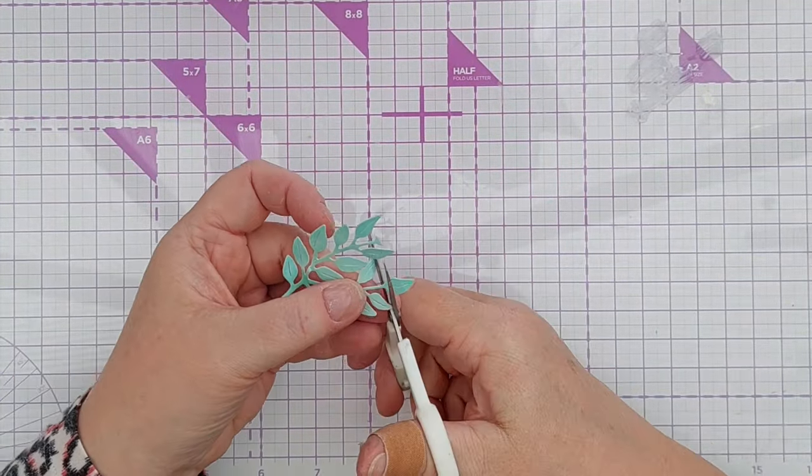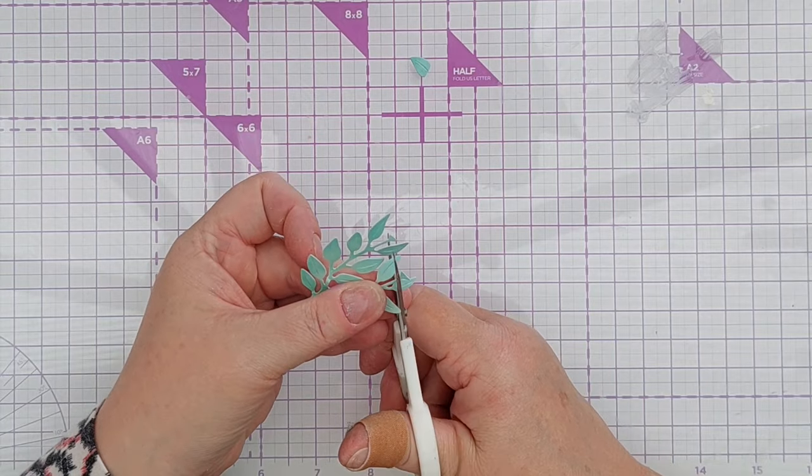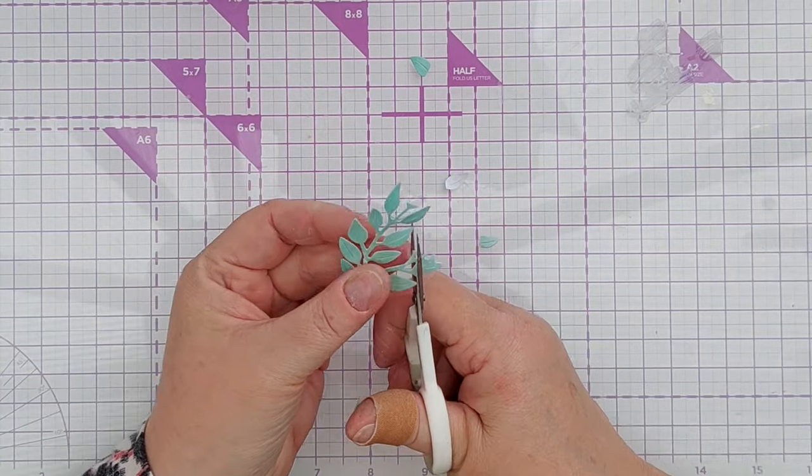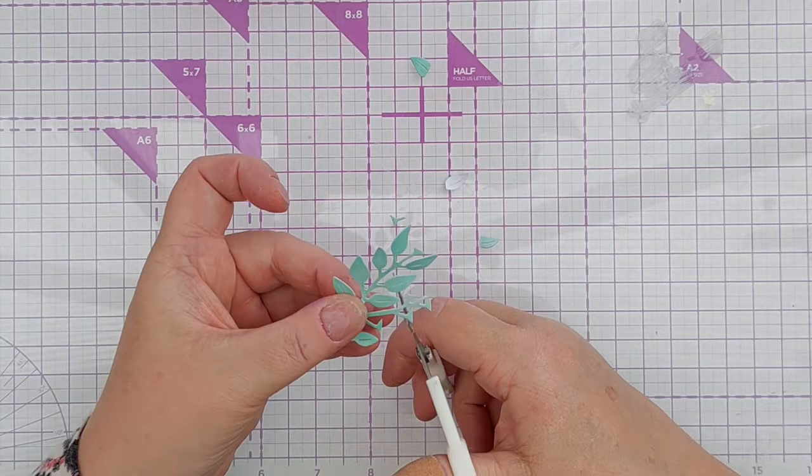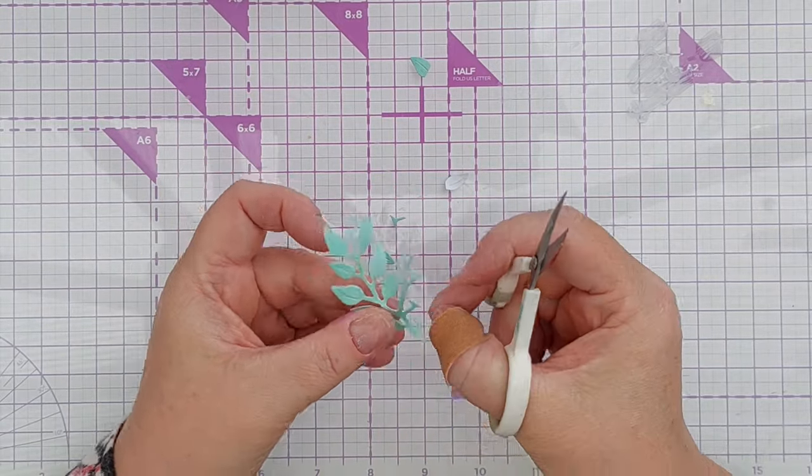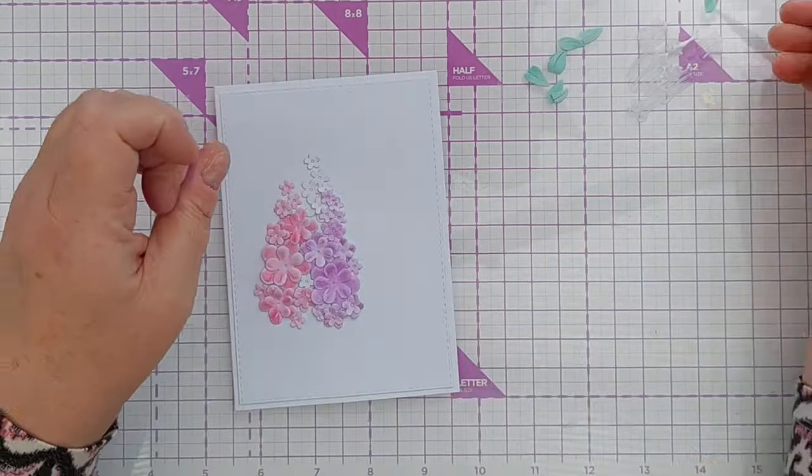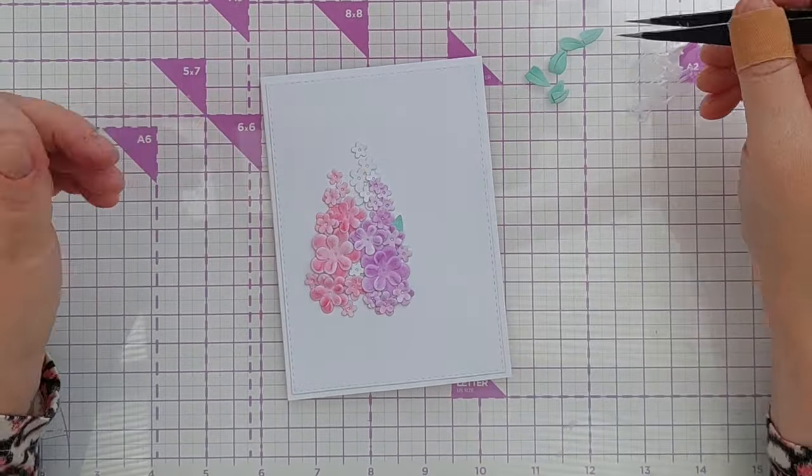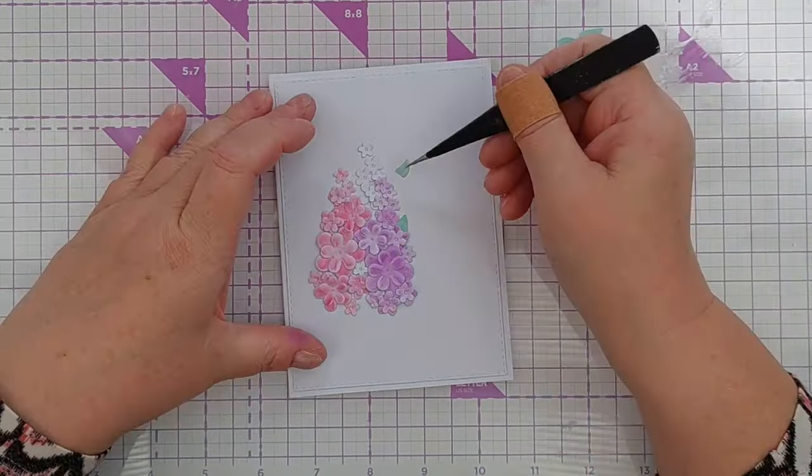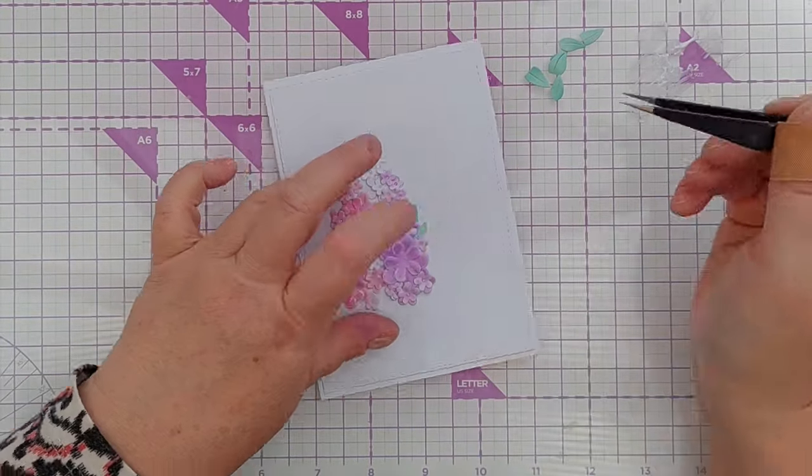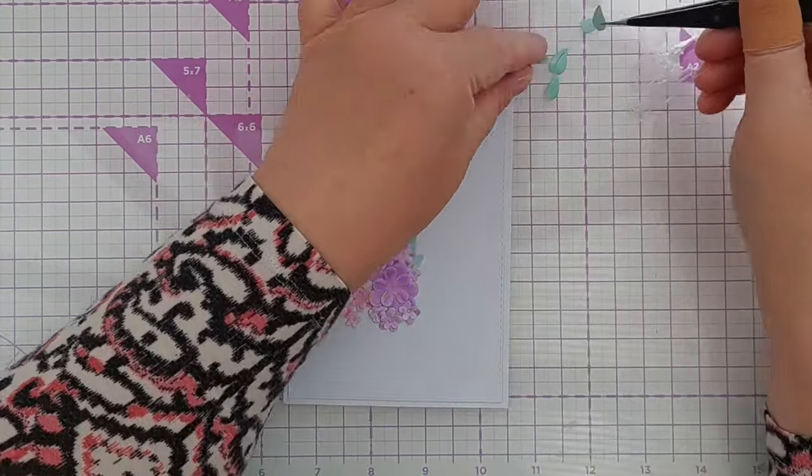So really even if I'd gone for a variegated look on these leaves you wouldn't have been able to tell because there's such tiny little bits peeking out around my flowers. Again I put some glue on my glass mat, dipped my leaves in and then tucked them in where I felt they looked natural-ish and filled out the flowers.